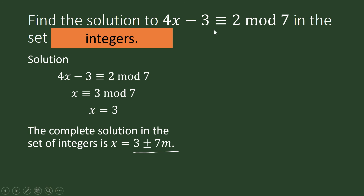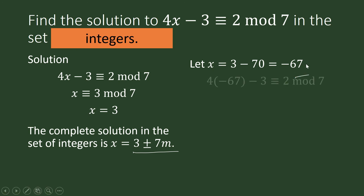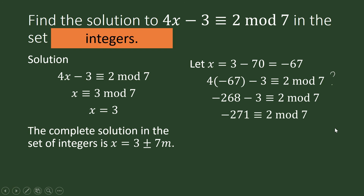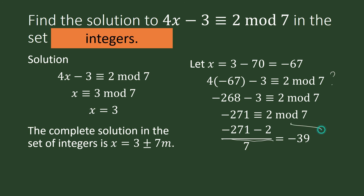Let's verify further: multiply 10 by 7 to get 70 and subtract from 3, giving negative 67. Is negative 67 a solution? 4 times negative 67 minus 3 is negative 271. Is negative 271 congruent to 2 modulo 7? Using the definition: negative 271 minus 2 divided by 7 equals negative 273 divided by 7, which equals negative 39 — an exact division. So this congruence is true, confirming that negative 67 is also a solution to this linear congruence equation.